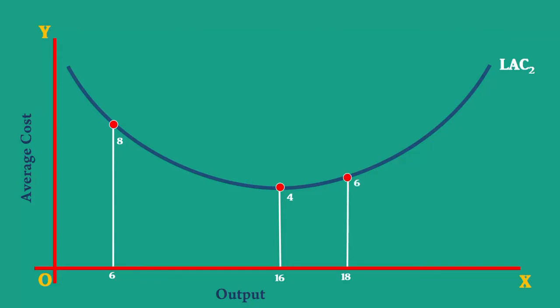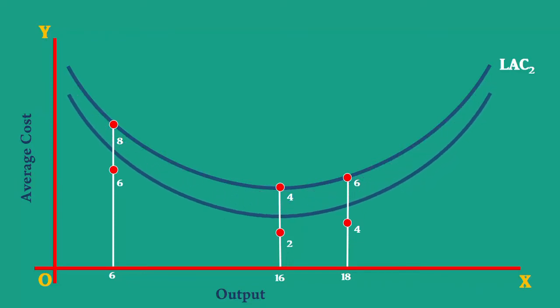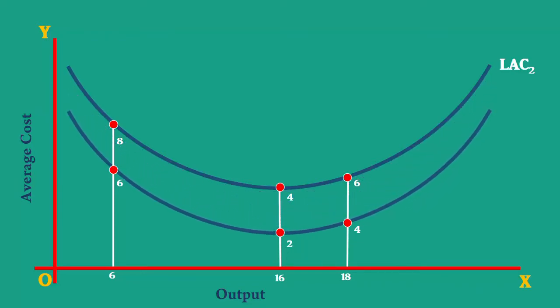At times, the firm can produce all these outputs at less cost — say, 6, 2 and 4 rupees respectively. Then, the Long Run Average Cost Curve will be bodily shifted down. The new Long Run Average Cost Curve is LAC1.